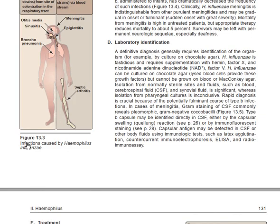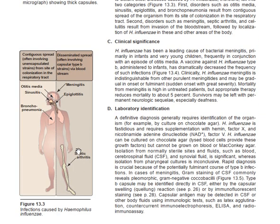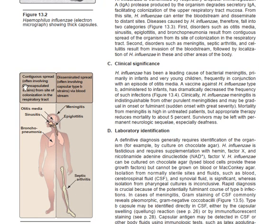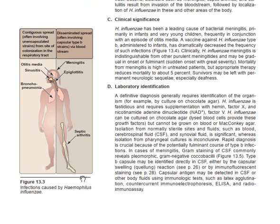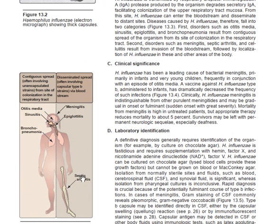What are the infections caused by Haemophilus influenzae? The first infection is contiguous spread causing otitis media, sinusitis, and bronchopneumonia. Other diseases include meningitis, epiglottitis, and septic arthritis — all caused by Haemophilus influenzae.